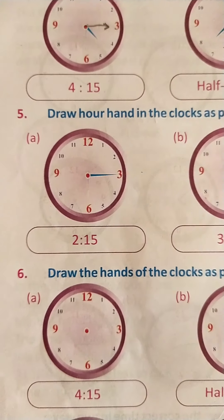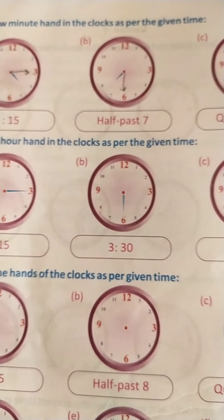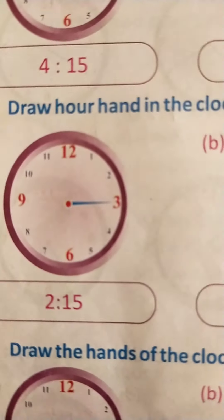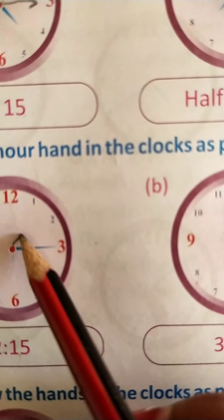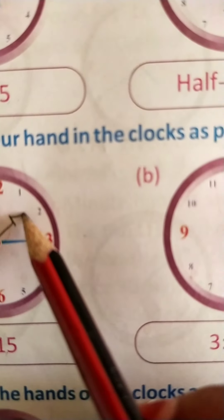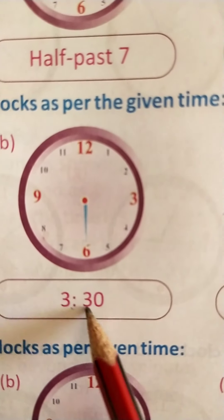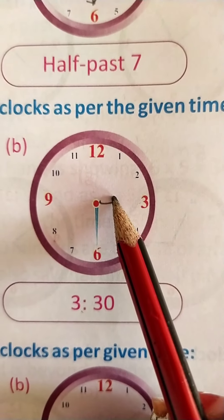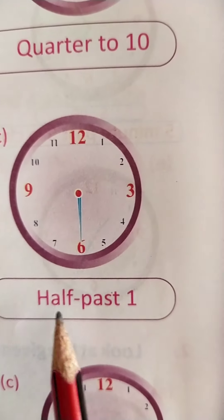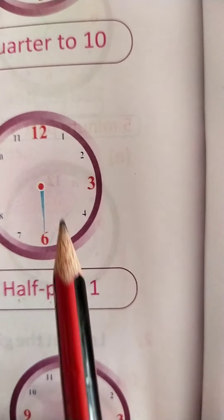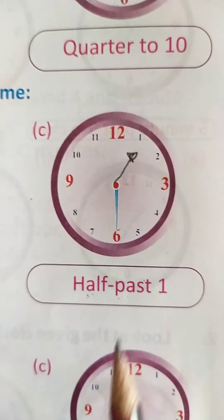Question number 5: draw the hour hand in the clock as per the given time. Here it is given 2:15, so you will draw the hour hand on 2. Here 3:30, so you will draw the hour hand on 3. And students here, half past 1 — so you will draw the hour hand on 1.